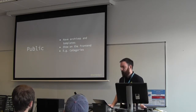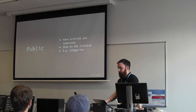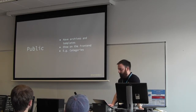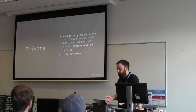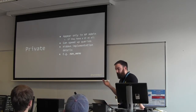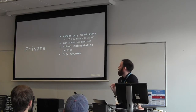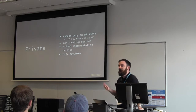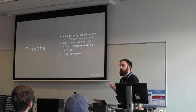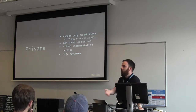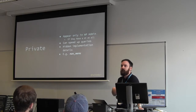Public taxonomies have archives and templates, they show on the frontend, and categories is pretty much the archetypal example. Private nav menus - that's what they're called - are very useful and completely hidden. They can speed things up by being used behind the scenes. You can also have private taxonomies that do have a user interface but are not on the frontend of the site for internal purposes.